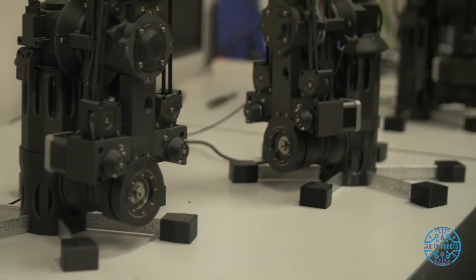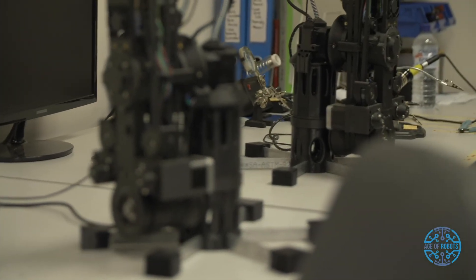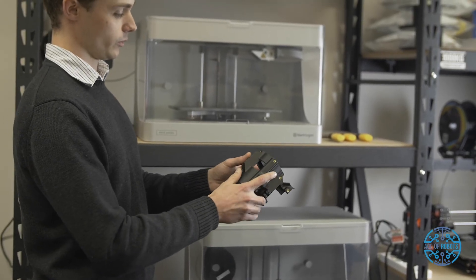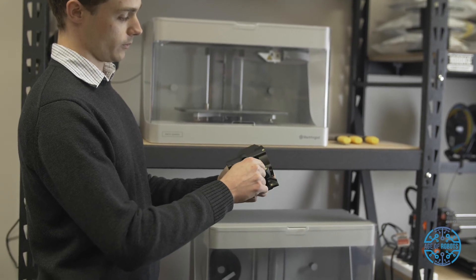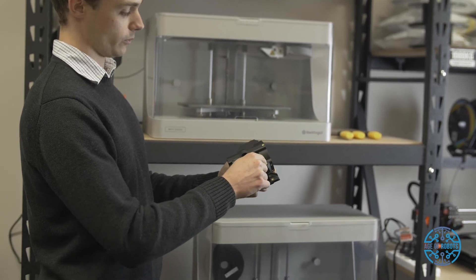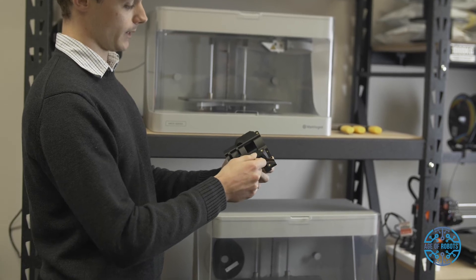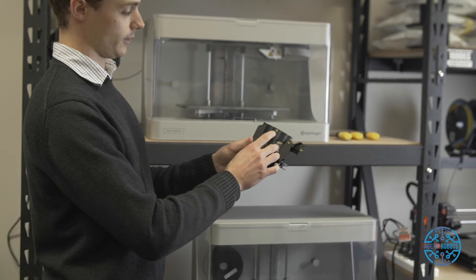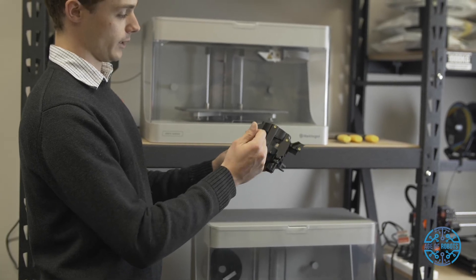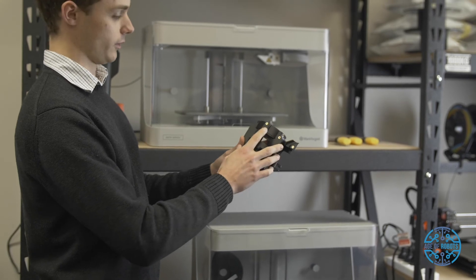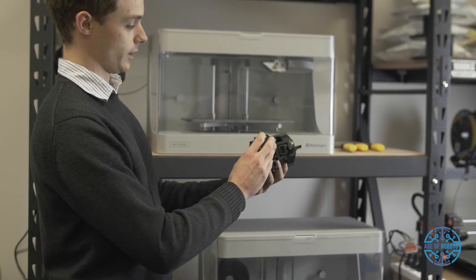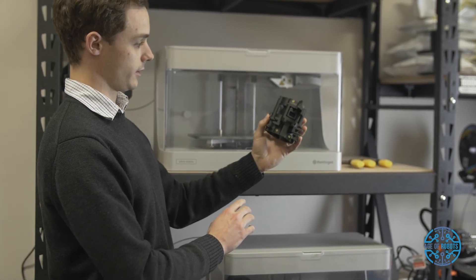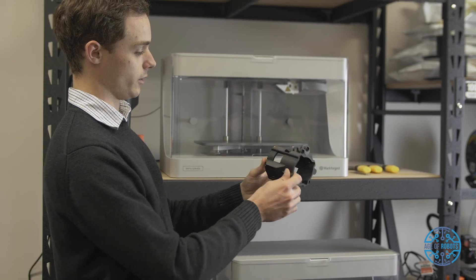There are some limitations to what you can print on the 3D printers. Threads in particular are quite hard to print, so the solution is to print a hole suited for an insert. You use a soldering iron to press the inserts into the plastic, which forms a bond with the knurled outside inside of the threaded insert. That allows you to basically create places to fix parts onto the body of the robot.